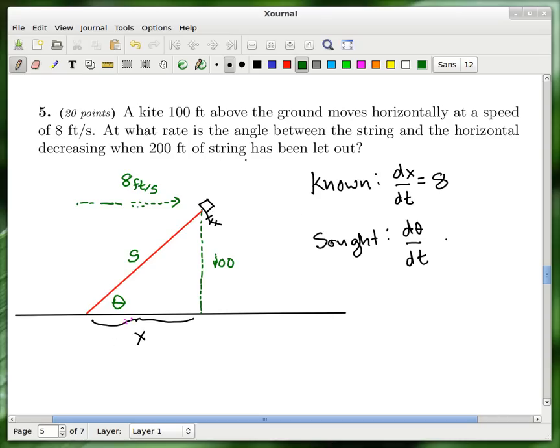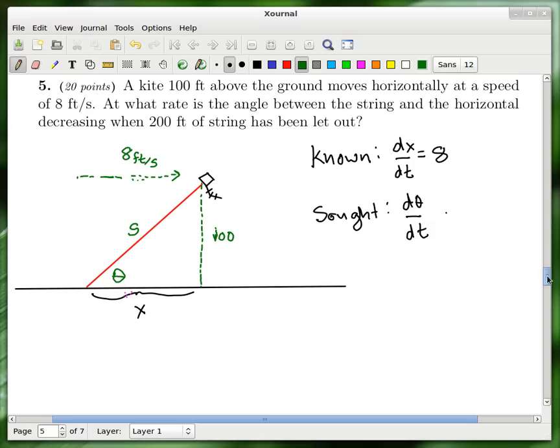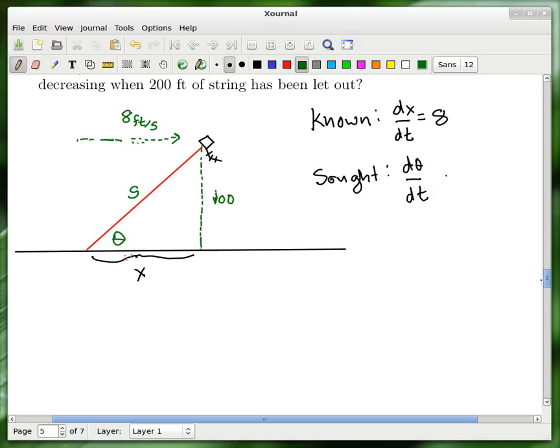And what else? So I've used s here to stand for the length of the string, even though at the moment we care about the string length is going to be 200. But you don't want to prematurely plug values in for these things. And this horizontal distance x, that's exactly what we care about because it's saying at what rate is, well, okay, so it's not what we're trying to solve for, but it is the rate that we know. So the kite is moving horizontally to the right at 8 feet per second. And so what is that in notation? That's dx/dt. So that's the known rate. And then the rate that we're trying to find is dθ/dt. So we need an equation that relates all these things.